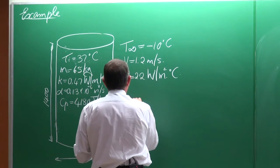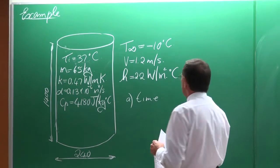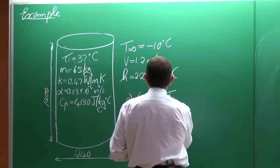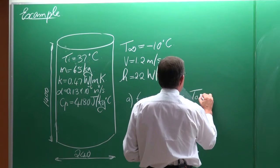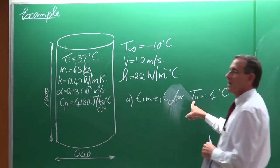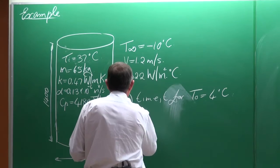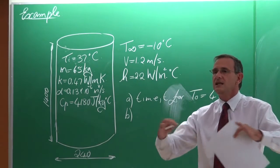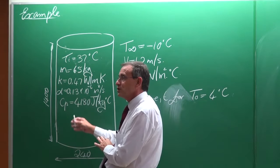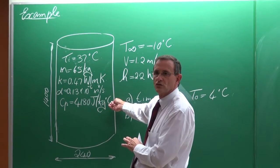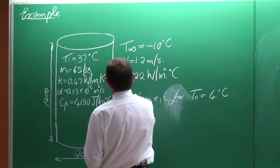Cp = 4180 J/(kg·°C). The outside refrigerator temperature is minus 10°C, velocity over the carcass is 1.2 m/s, and the heat transfer coefficient is 22 W/(m²·°C) or Kelvin. We need to determine the time T for the center temperature T₀ to reach 4°C, and also determine if freezing will occur at the surface.